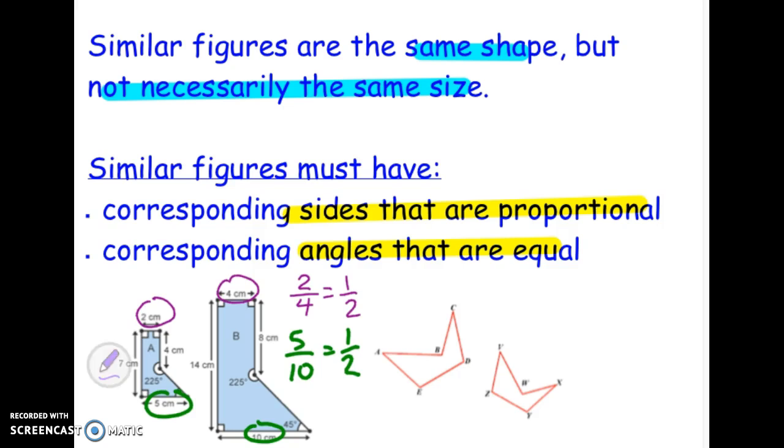Corresponding angles have to be exactly the same. They have to be equal. So here's a right angle. This angle corresponds to it. It's also a right angle.